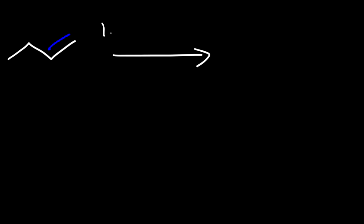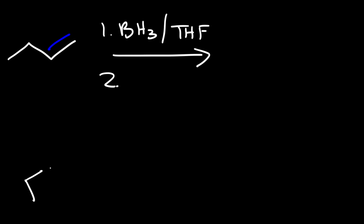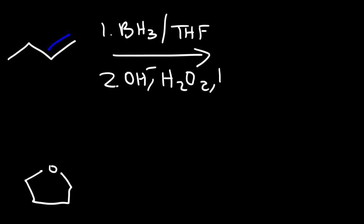In this lesson, we're going to go over the hydroboration-oxidation reaction. Let's start with 1-butene. What is the major product of this reaction? In the first step, we're going to have BH3 with THF. BH3 is borane, THF is tetrahydrofuran. In step 2, we're going to have hydroxide, hydrogen peroxide, and water.